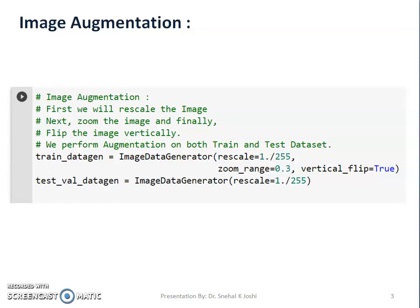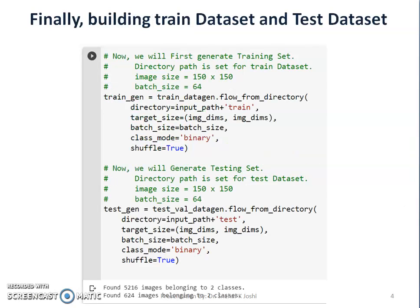As we know, the image is in grayscale, so each pixel has a value ranging from 0 to 255. This increases computational burden, so it's better to scale them to a range of 0 to 1 by dividing by 255. We provide zoom range as 0.3 and perform vertical flip. For the test dataset, we do not augment by flipping or zooming, we only rescale it. Now finally, we build the train and test datasets using parameters like image size and batch size.